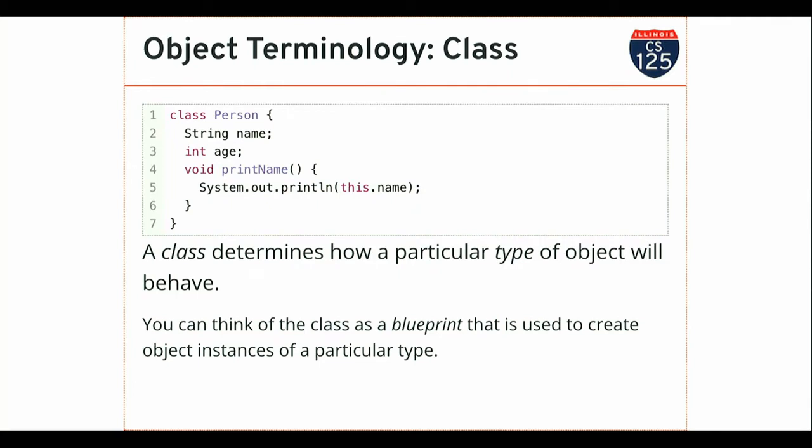What you find inside the class is a mixture of state — things that look like variable declarations — and behavior — things that look like functions. This is a method; it looks exactly like the methods you've been writing. It just happens to be inside this class declaration. Another analogy we sometimes use is that the class is like a blueprint — it shows Java how to create a new instance of this class.